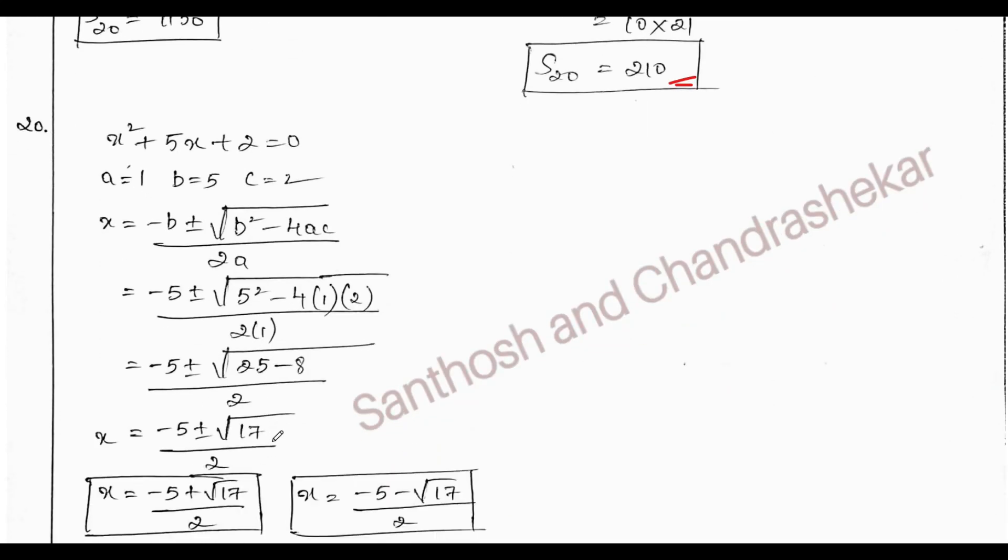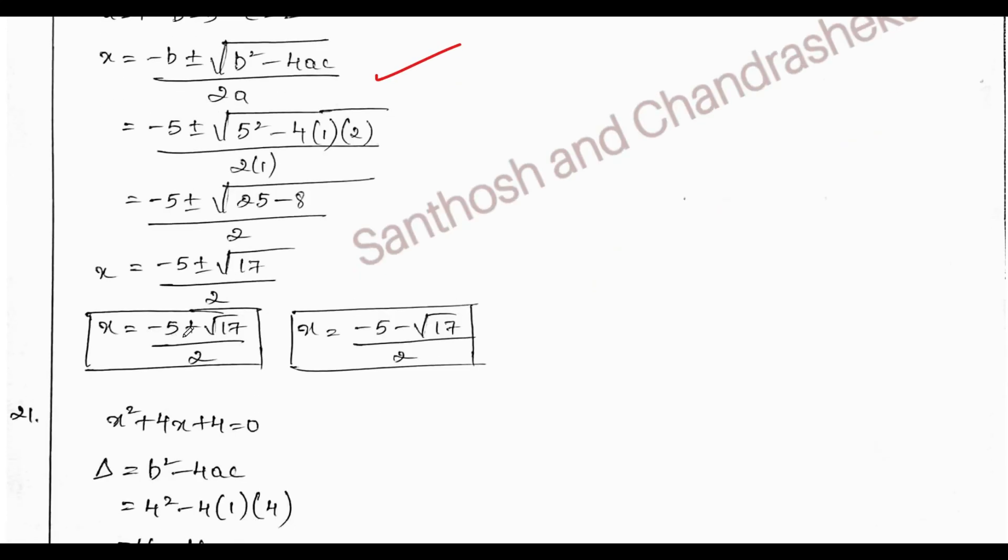Next, the 20th question, simple quadratic equation. By using quadratic formula, we get x equals minus 5 plus root 17 by 2 or x equals minus 5 minus root 17 by 2.